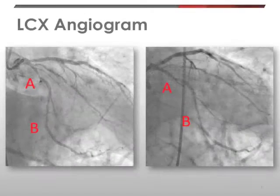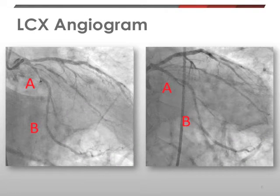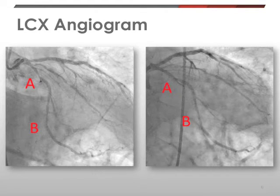As you can see from these pictures, we've now labelled the potential stenoses identified from the first angiogram. The proximal one we've labelled A and the more distal one we've labelled B. From these images it's not immediately apparent from the angiograms which is most significant and which would potentially benefit most from stenting.